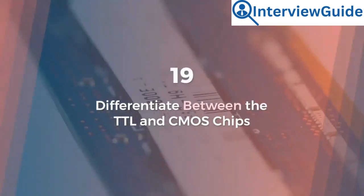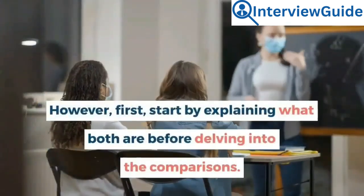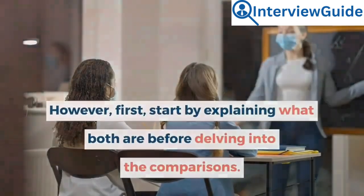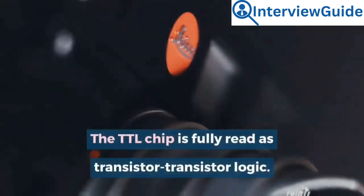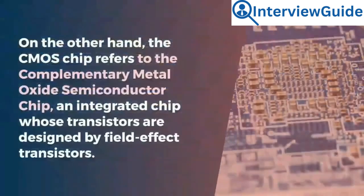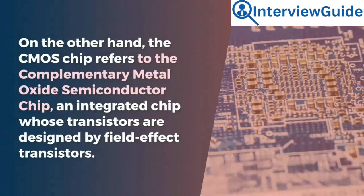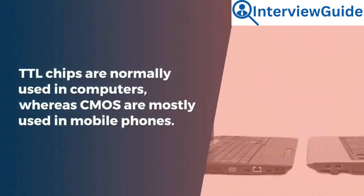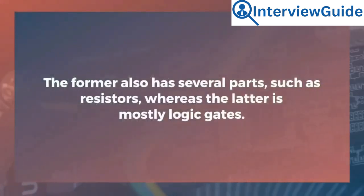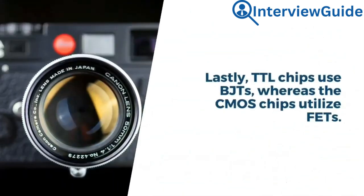Question 19: Differentiate between the TTL and CMOS chips. Start by explaining what both are before delving into the comparisons. Sample answer: The TTL chip stands for transistor-transistor logic; each logic gate is usually designed using two bipolar junction transistors. The CMOS chip refers to the complementary metal oxide semiconductor chip, an integrated chip whose transistors are designed by field-effect transistors. Differences: TTL chips are normally used in computers, whereas CMOS chips are mostly used in mobile phones. TTL chips have several components such as resistors, whereas CMOS chips are mostly logic gates. TTL chips also use lots of power compared to CMOS chips. Lastly, TTL chips use BJTs, whereas CMOS chips utilize FETs.